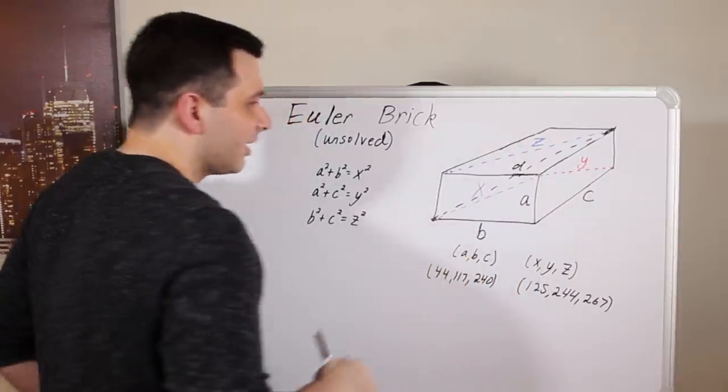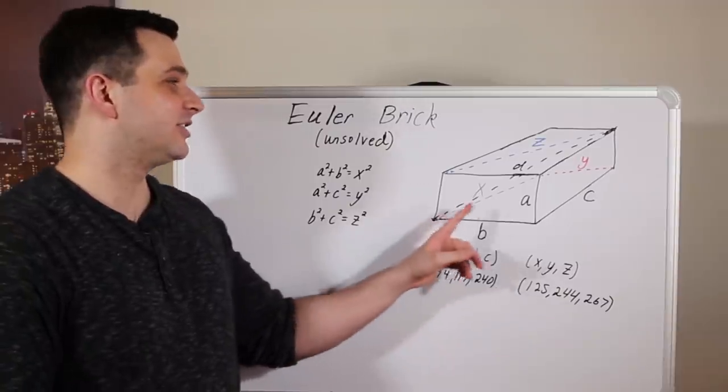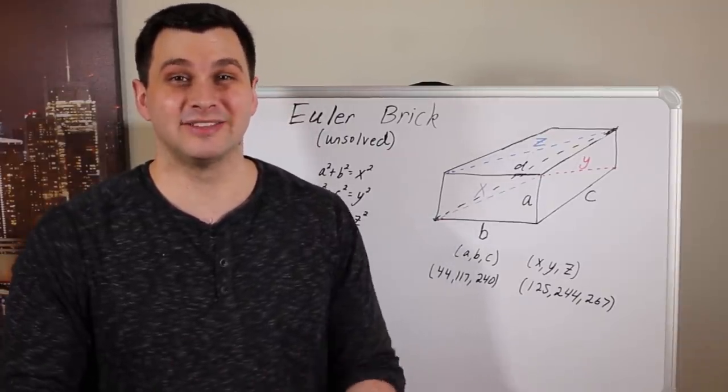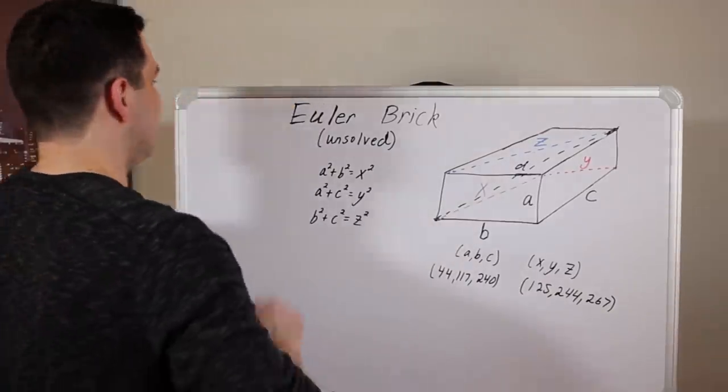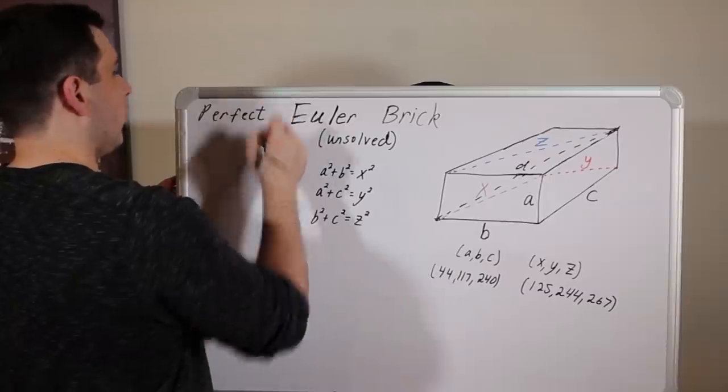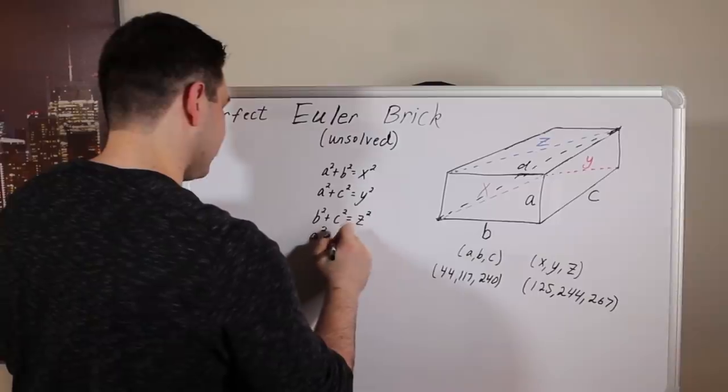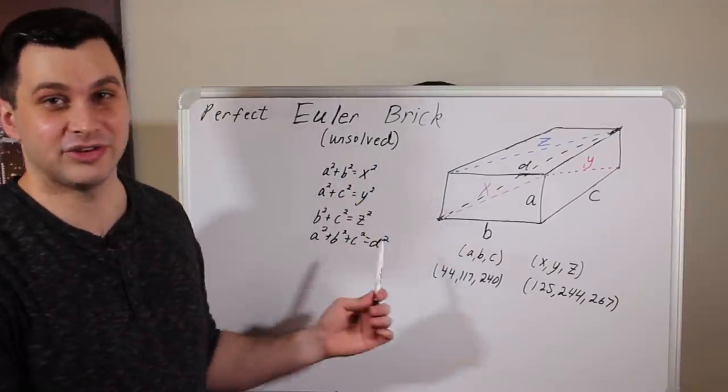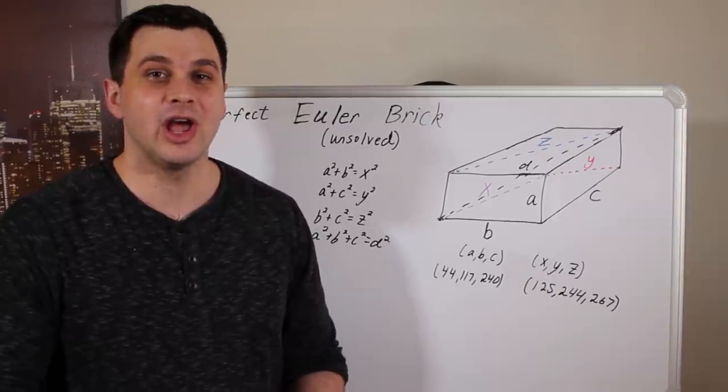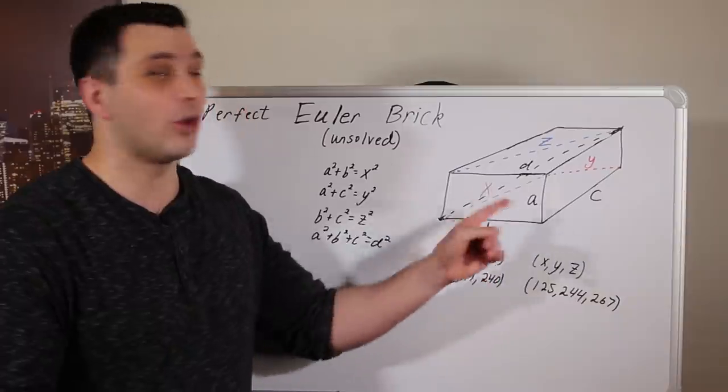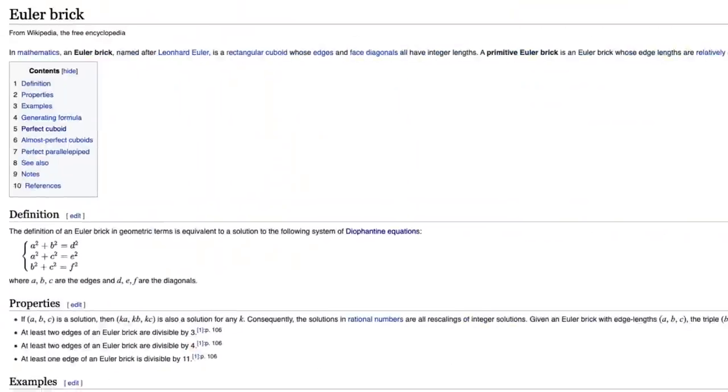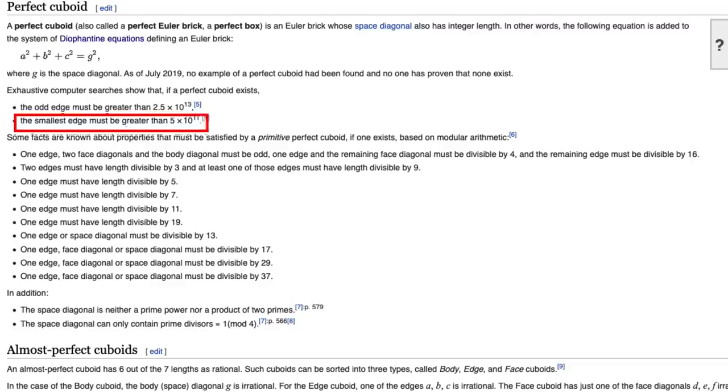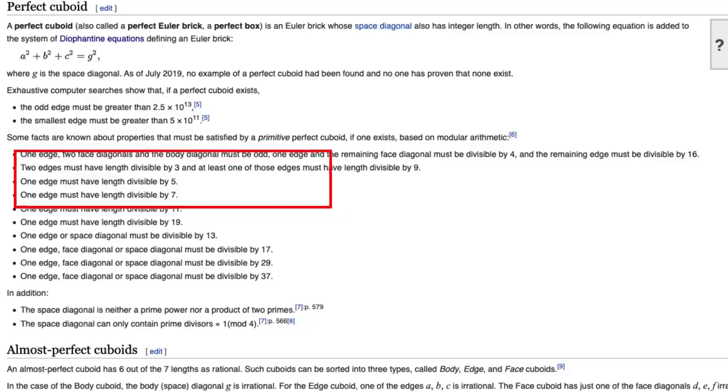If you can find an A, B, and C such that everything here is an integer, you have found a perfect Euler brick. However, the question of does a perfect Euler brick exist is still unsolved. That's the part we don't know. When we add in that fourth equation, which would be A squared plus B squared plus C squared equals D squared the diagonal, then we don't know if there are integer solutions that satisfy these four equations. However, through the use of computers and just number theory, we have found out a lot about the properties of these numbers if an Euler brick does exist.